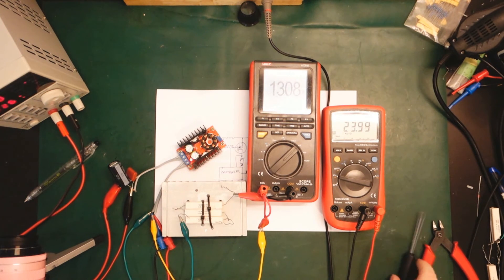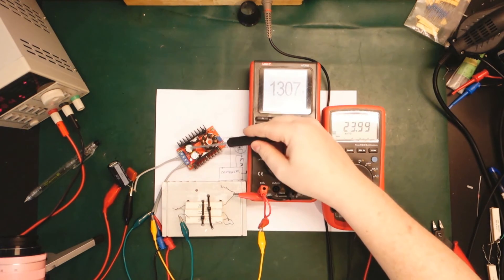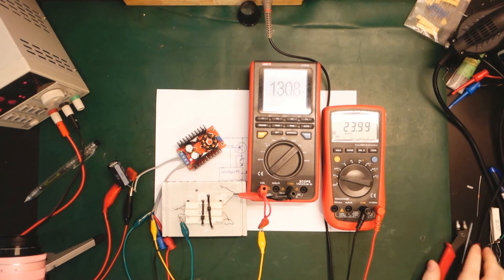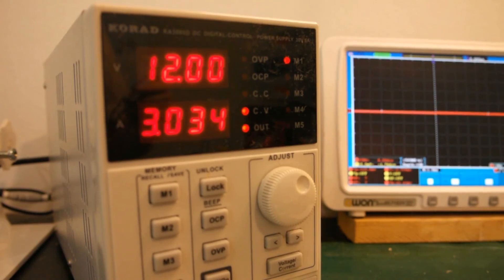Yeah, these two capacitors here are probably much too small. Just simply not good enough for any kind of significant load. Let's have a look at what the output looks like now on the scope.